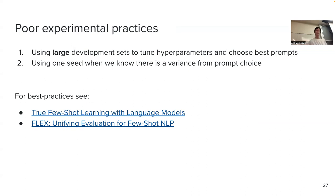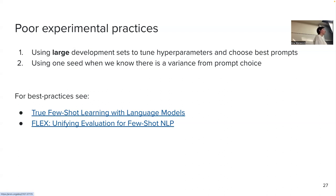We have all these sensitivities — using a single seed, same order, not repeating across different choices was a problem. Here are two papers that talk about better practices for few-shot evaluation. These days, because this has become more mainstream, I don't see this being as huge an issue. People are aware they should be doing more robust evaluations, but just have that in mind.